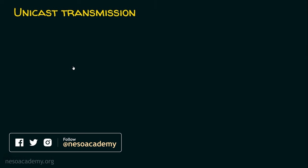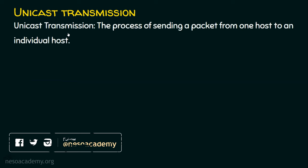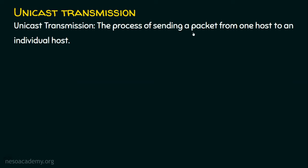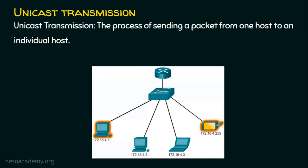Let's start with unicast. In a unicast transmission, it is the process of sending a packet from one host to an individual host. The sender is going to send the data to exactly one host — that is, only one destination host. In this example, there is a source,